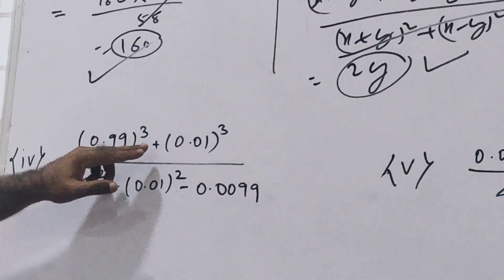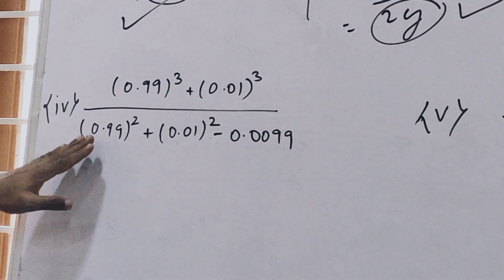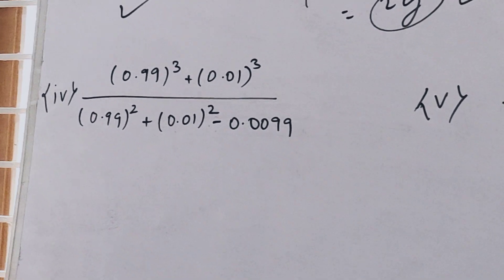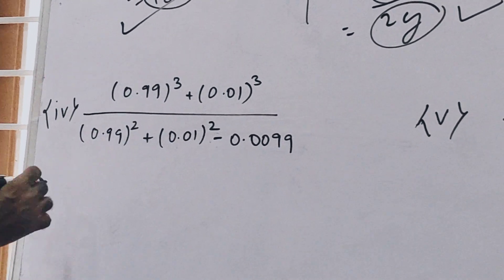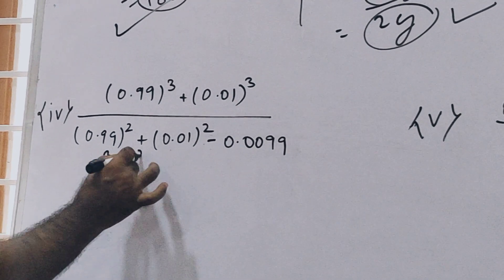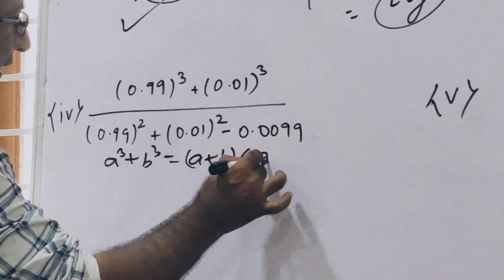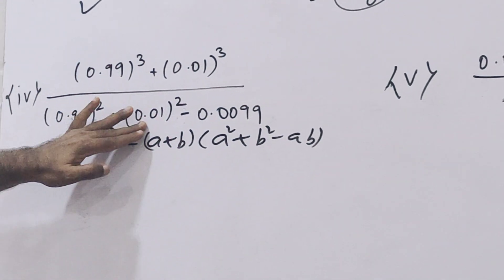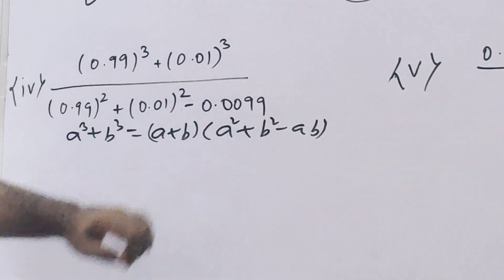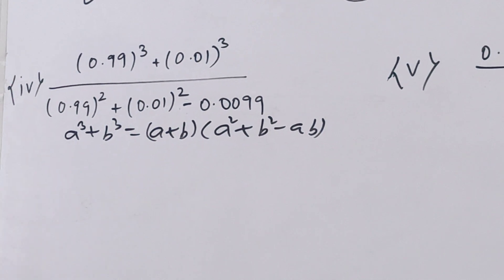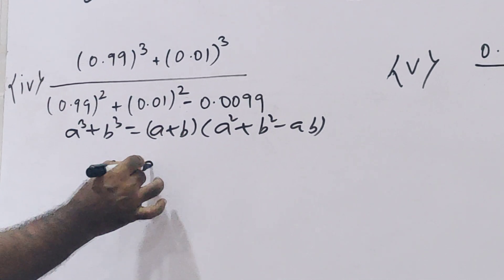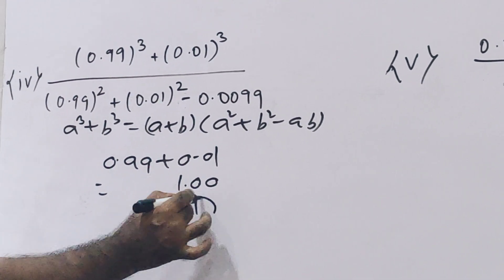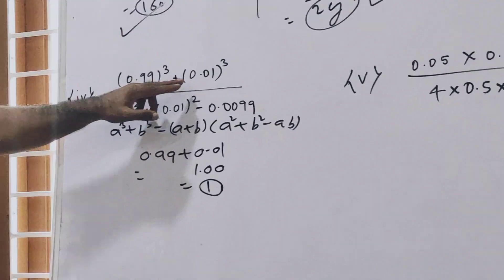Now this is the fourth question: 0.99 cubed plus 0.01 cubed, upon 0.99 squared plus 0.01 squared minus 0.0099. Again this is the same logic, but here it is a cubed plus b cubed. You know the formula: a cubed plus b cubed equals (a+b) into (a squared plus b squared minus ab). So the denominator — this square plus this square minus this times this — cancels out. Your answer is only a plus b, that is 0.99 plus 0.01, which equals 1.00. The correct answer is 1.